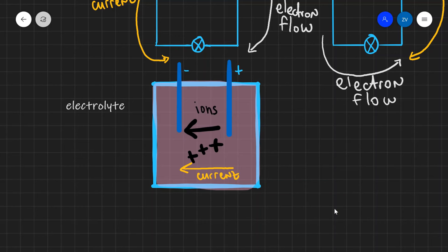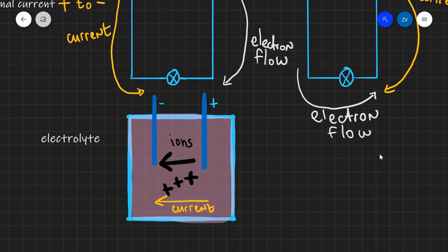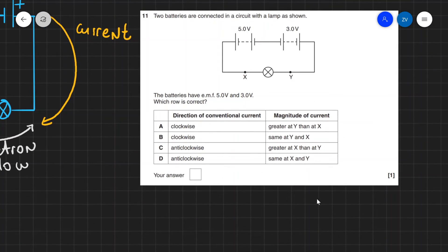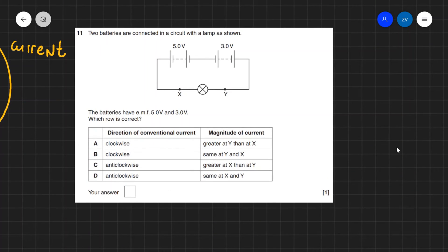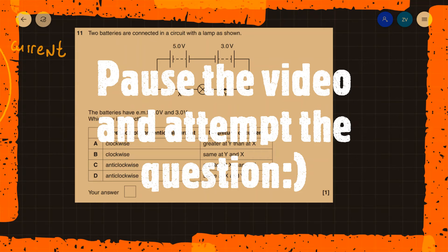And let's apply what we have just learned to a past paper question. This is question 11 from, I believe, the OCR Breath and Physics AS paper from 2016. We have two batteries which are connected in the circuit with a lamp as shown. Which row is correct? And this will be a perfect opportunity for you guys to pause the video and attempt the question.